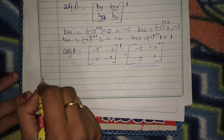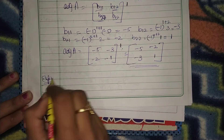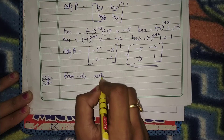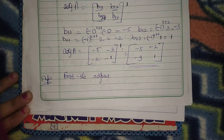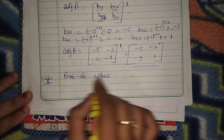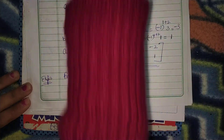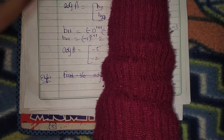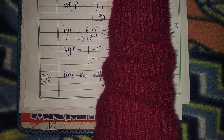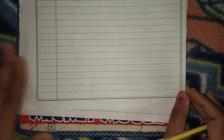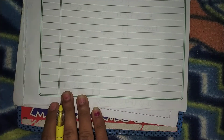Now we find the adjoint of a 3 cross 3 matrix. In the next example we will find the adjoint and also prove some other things. We have seen how to find the adjoint of a 2 cross 2 matrix; we will also see how to find it for a 3 cross 3 matrix. The process is the same — we just need a little more work to find cofactors.